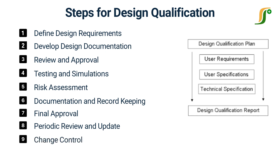Change control: implement a robust change control process to manage any design changes or modifications, and ensure that they are properly documented, reviewed, and approved. Verification and validation: design qualification is part of the broader process of verification and validation, which includes other stages such as installation qualification, operational qualification, and performance qualification to ensure the overall compliance, functionality, and performance of the system or equipment.